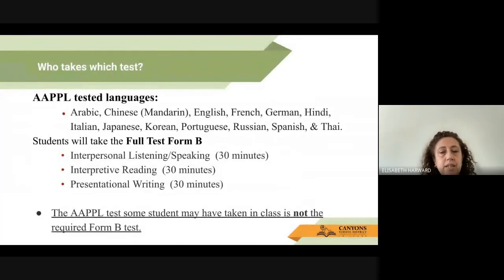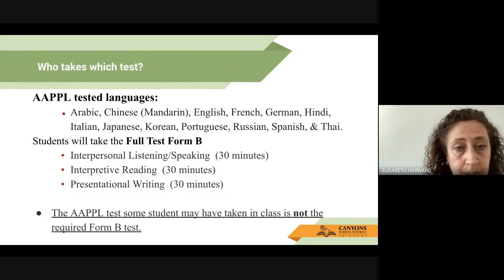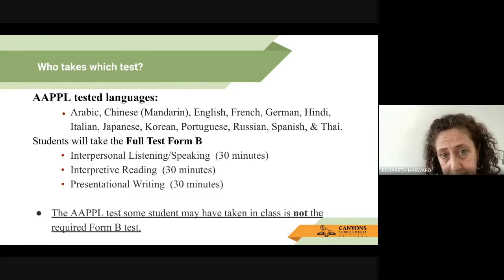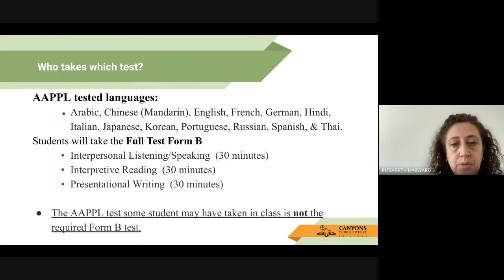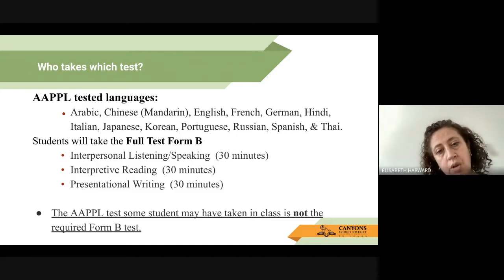Who takes which test? If you are testing with AAPPL, you are testing in Arabic, Chinese, English, French, German, Hindi, Italian, Japanese, Korean, Portuguese, Russian, Spanish, or Thai. All those are the languages tested with AAPPL. If you test with AAPPL, you will take the full test on Form B, testing all the different sections.